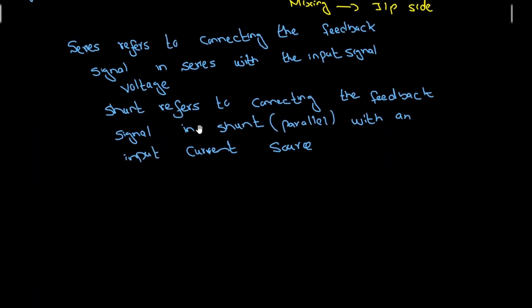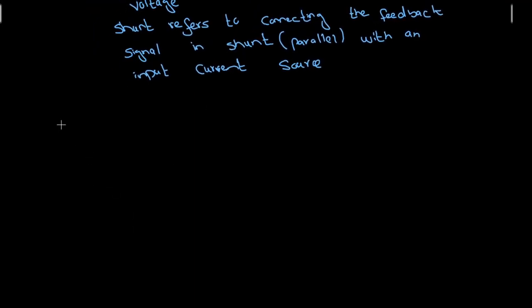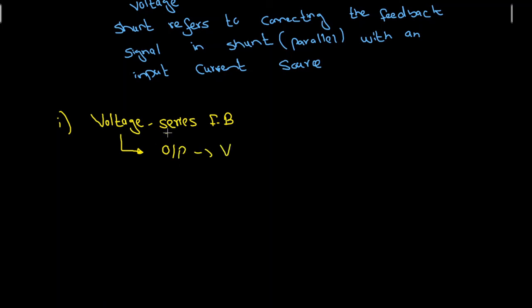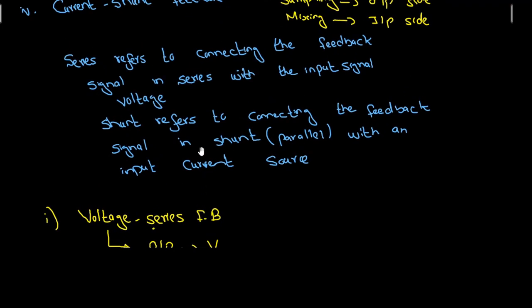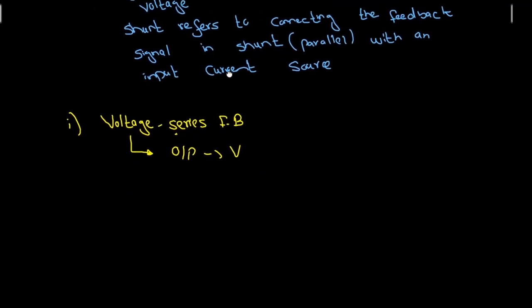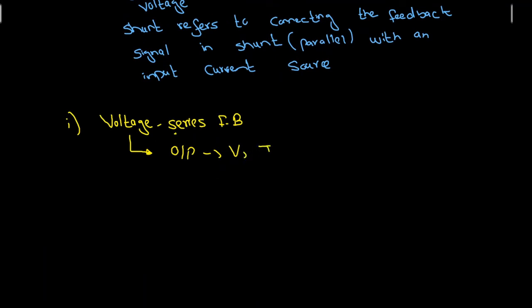Let us discuss each topology in detail. First, voltage-series feedback: the first term indicates sampling at the output side, so output is voltage. The second term 'series' indicates mixing at the input side, and series refers to connecting the feedback signal in series with the input signal voltage. So the input signal is also voltage. In summary, output signal is voltage, input signal is voltage, and feedback signal is also voltage.